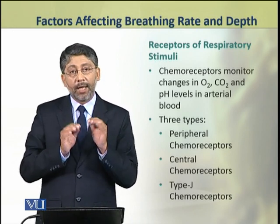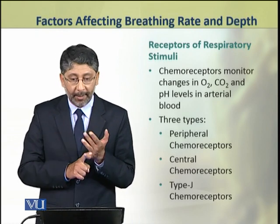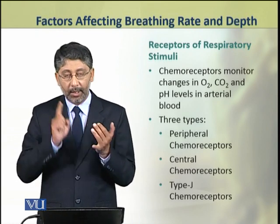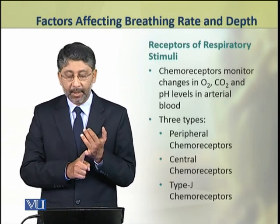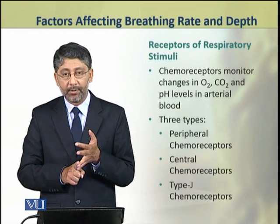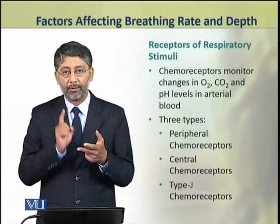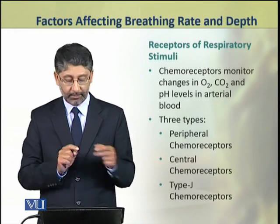Is tarih ke chemoreceptors ki teen types hain. Number 1, peripheral chemoreceptors. Number 2, central chemoreceptors. Number 3, type J chemoreceptors.